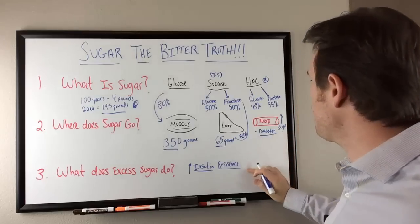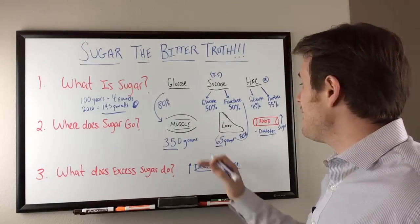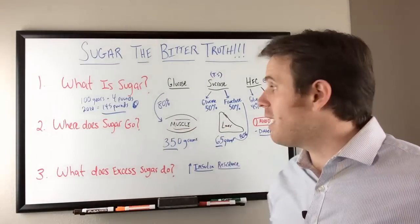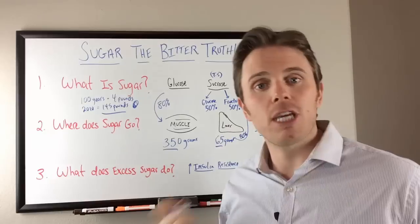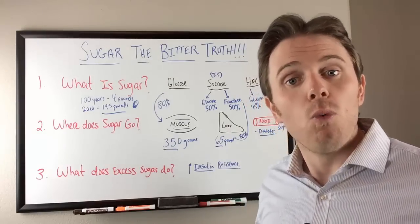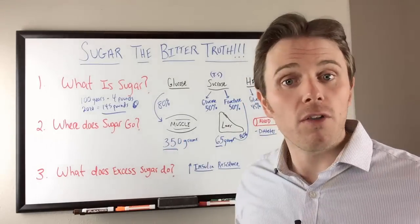But what's happening here is we're developing systemic insulin resistance when that liver becomes saturated and when the muscle becomes saturated. Now, it's always better to be consuming more glucose than fructose just because of the fact that your muscles can metabolize glucose better. One, if you exercise and you have bigger muscles, you may have a bigger reservoir there.